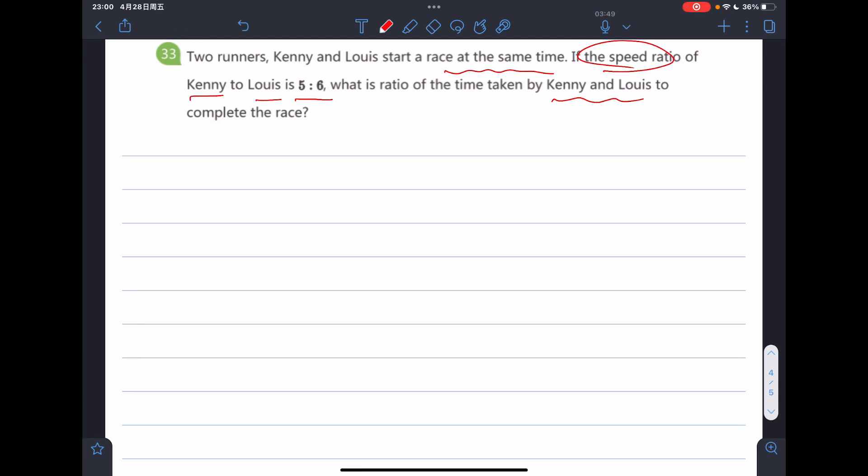And now we need to find out what's the ratio of the time taken by Kenny and Luis to complete the race. So it means which one is fixed? Speed, distance, or time? Which one?